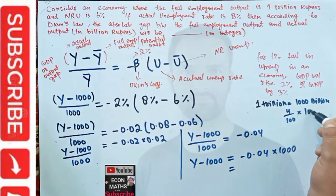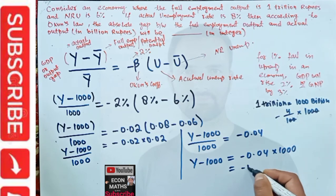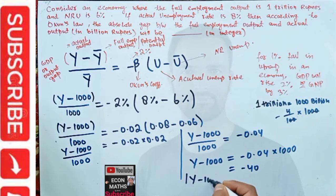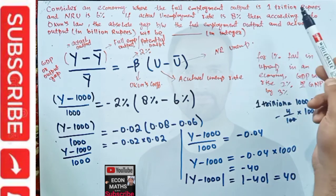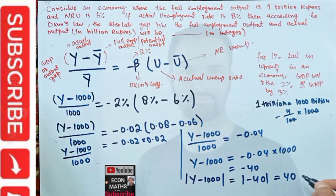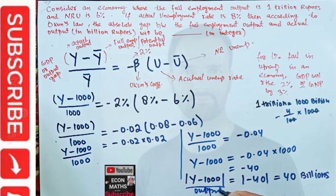So y minus 1000 equals minus 40. The question asks for the absolute gap, so the absolute value of (y minus 1000) equals 40. Since we converted trillions into billions, the answer is 40 billion. This y minus 1000 is our output gap. I hope I made myself clear. If you find this video helpful, please share and subscribe to this channel.